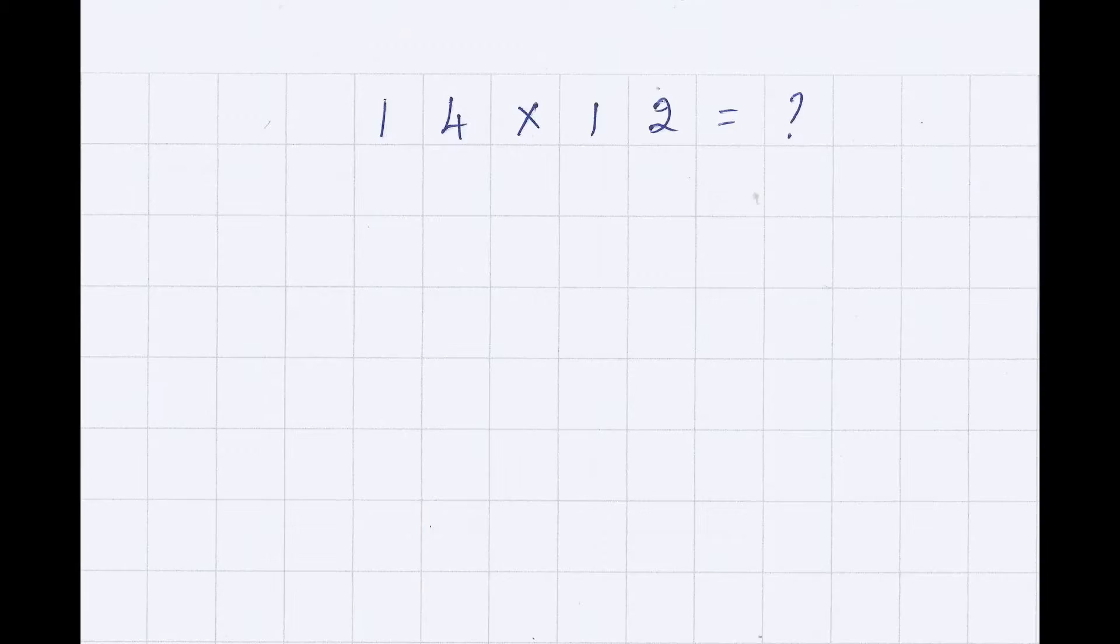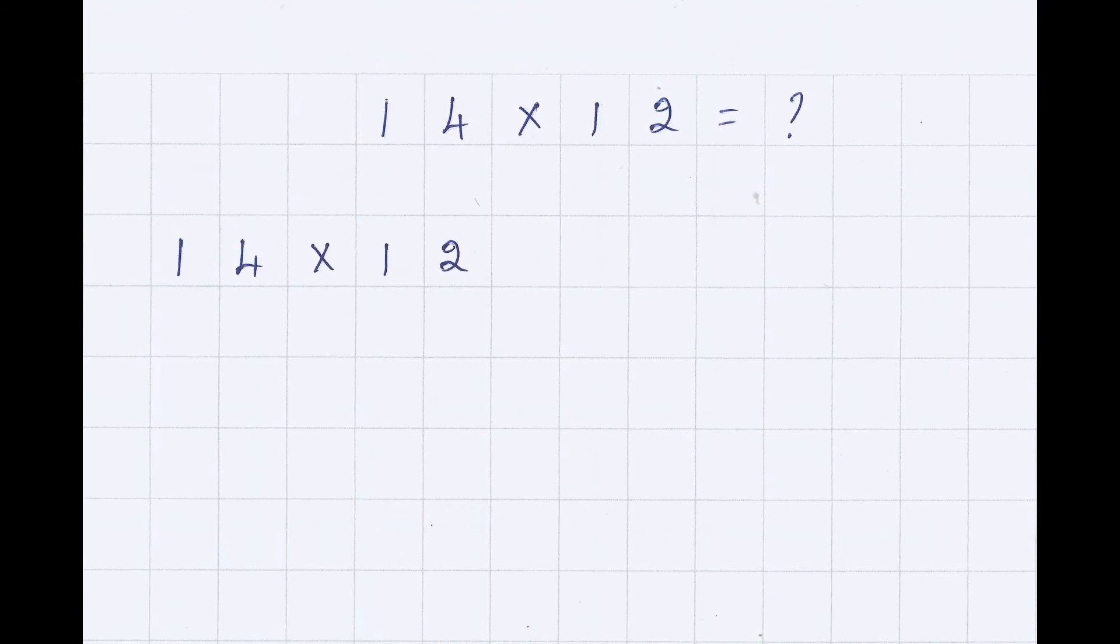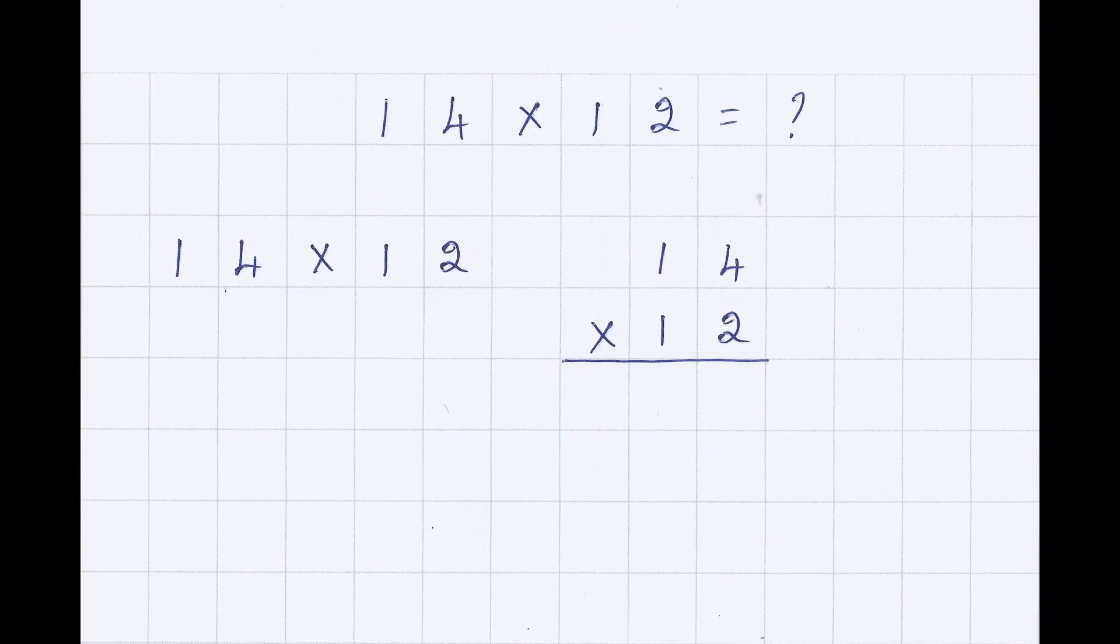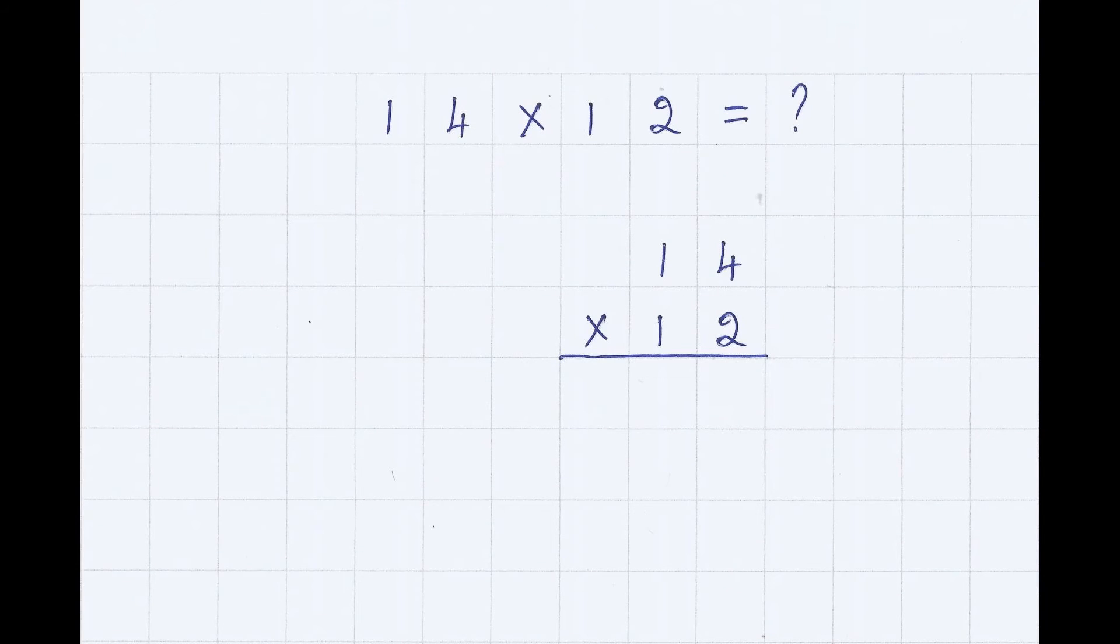Students must move to the abstract stage, which is long multiplication. 14 multiplied by 12 can be written in two ways. Start multiplication from the units place.